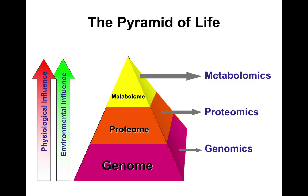I use a slide I call the pyramid of life — a way of relating the genome to the proteome to the metabolome. The base is the genome, from which all things are coded. DNA is translated to proteins, and proteins are designed to act on or transport metabolites. Metabolites then act back on the genome and proteome, creating a nice feedback. The study of genes is genomics, proteins is proteomics, and metabolites is metabolomics.